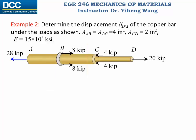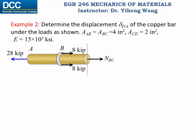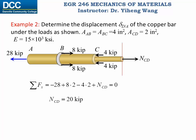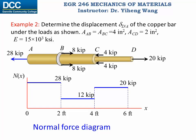Then we section between point B and C, write the force equilibrium equation, and solve for the normal force NBC to be 12 kilopounds, which is constant anywhere between points B and C. Lastly, we section between point C and D, expose the internal normal force NCD, write the force equilibrium equation, and solve for NCD to be 20 kilopounds, which is constant anywhere between points C and D. We can summarize the internal normal force using the normal force diagram, which shows what the normal force is anywhere along this member.